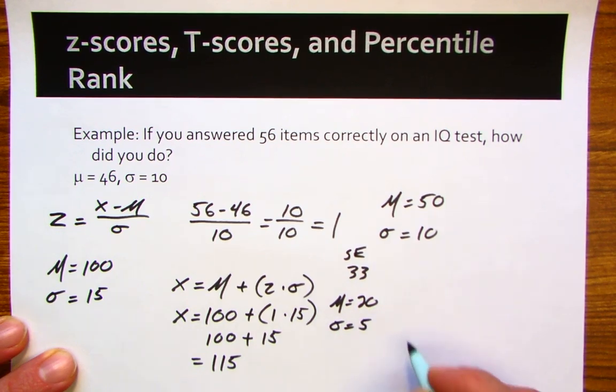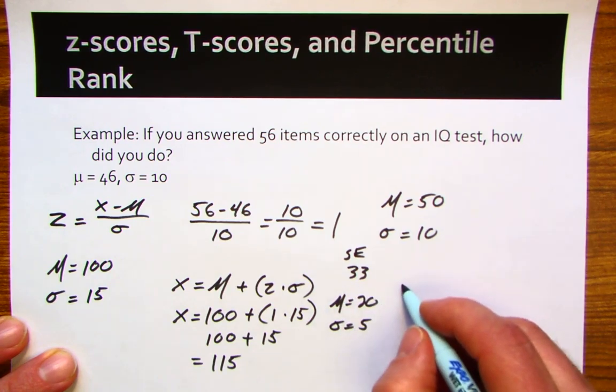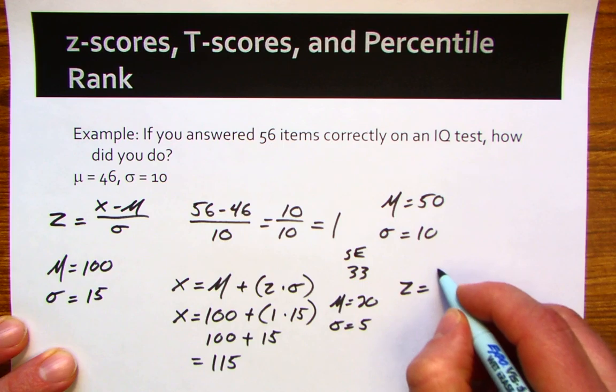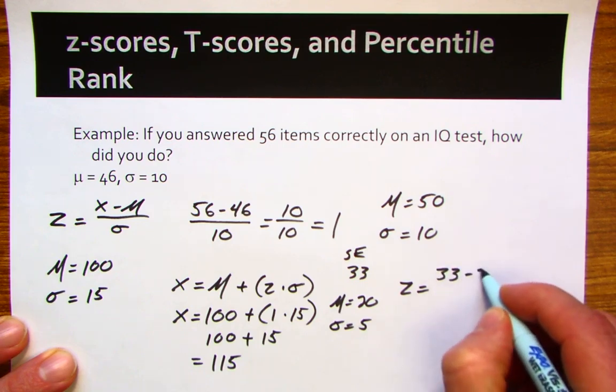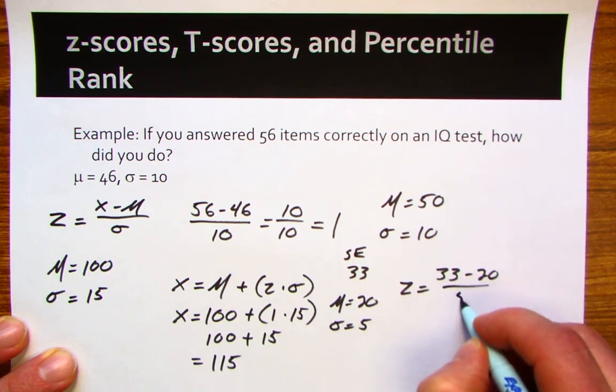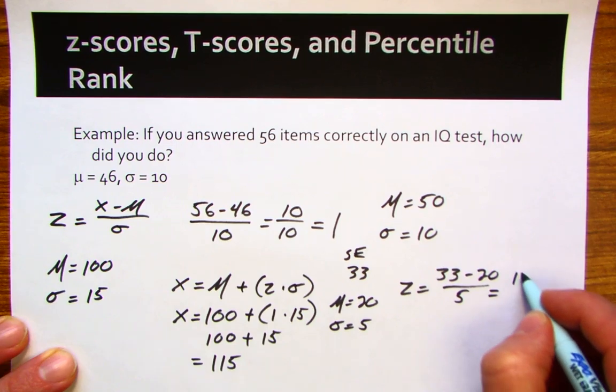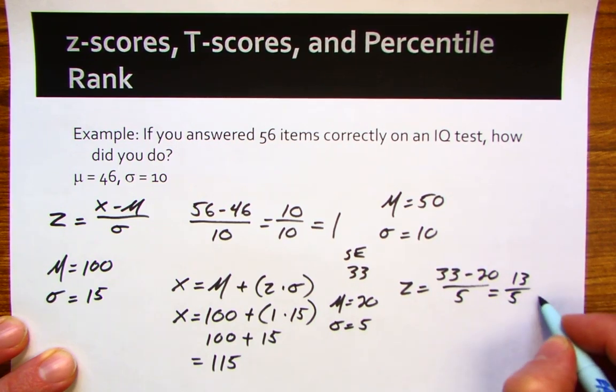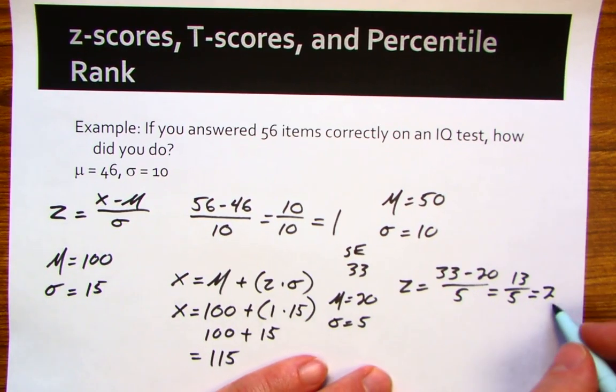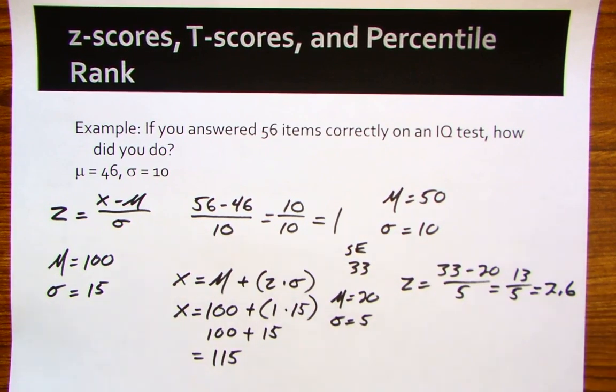We could first figure out your z-score: 33 minus 20 divided by 5, 13 divided by 5, which would be 2.6 for your z-score.